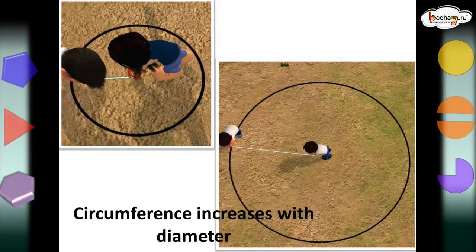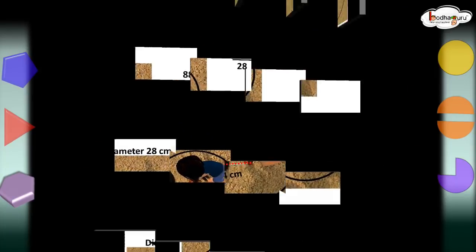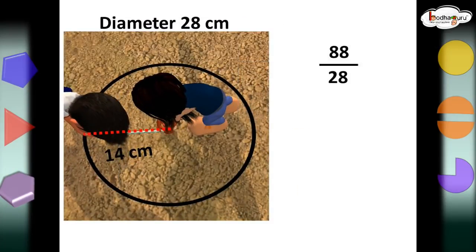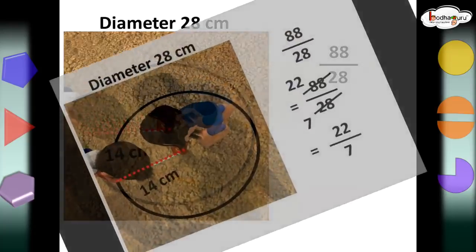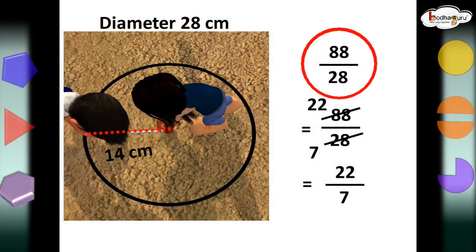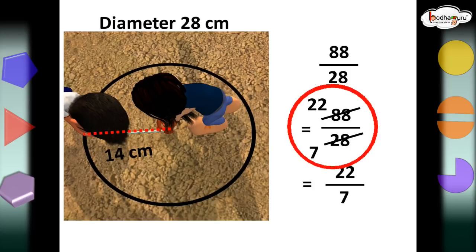What do we see? As the diameter got bigger, the circumference got bigger too. But you know, there is a certain relation between the circumference and the diameter, and that remains same always. Let's find that relation. In the first case, the circumference was 88 cm, and the diameter was 28 cm. Let's find the ratio of 88 and 28. 88 and 28 are divisible by 4. 4 sevens are 28, 4 twenty-twos are 88. So, we get 22 by 7.